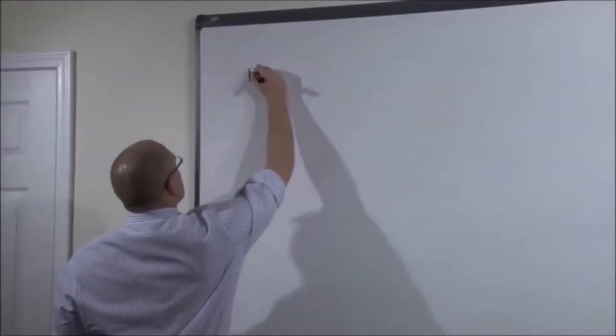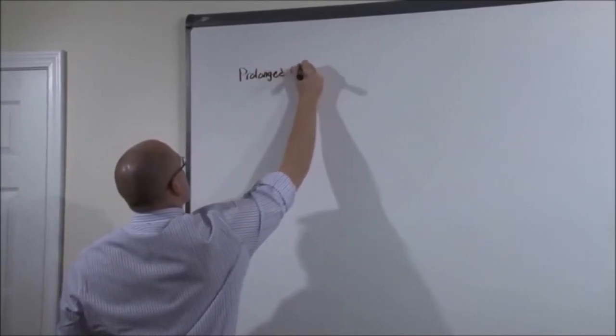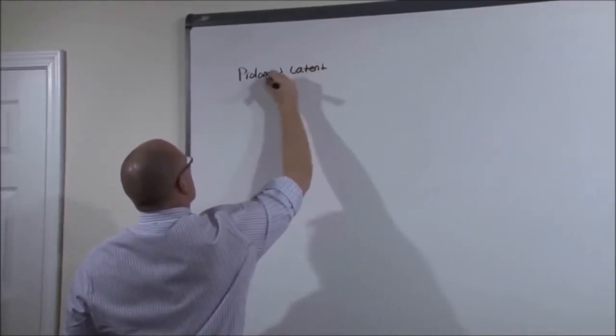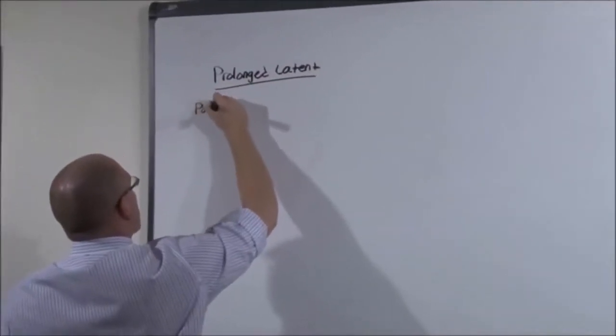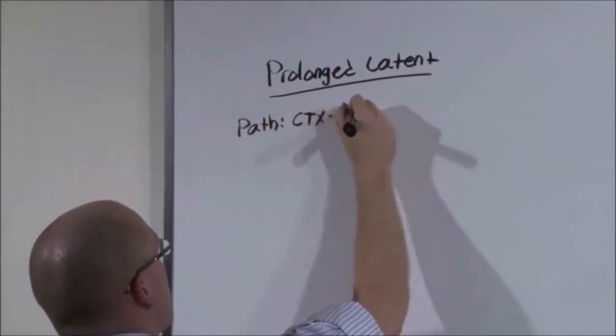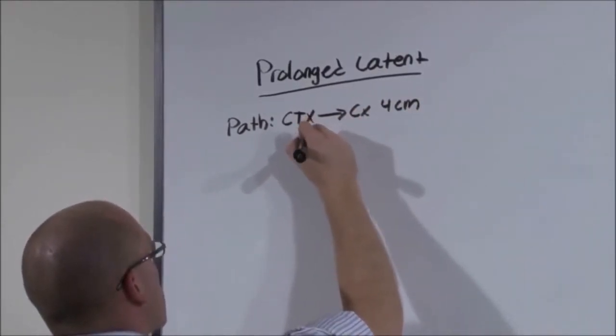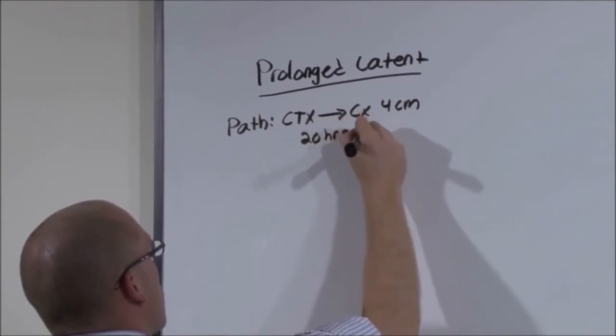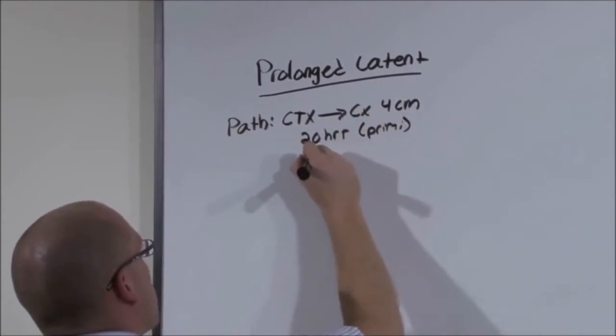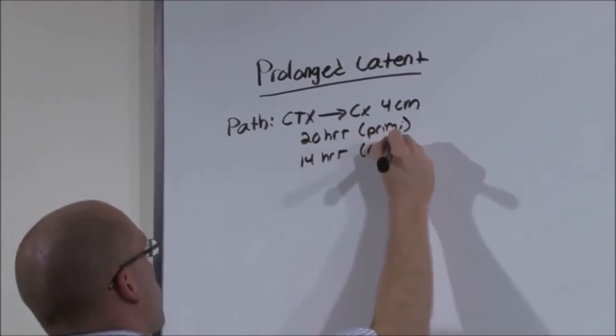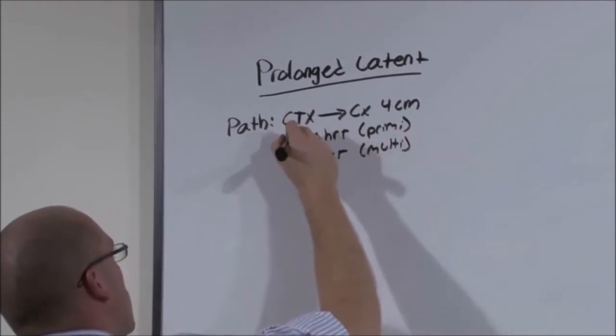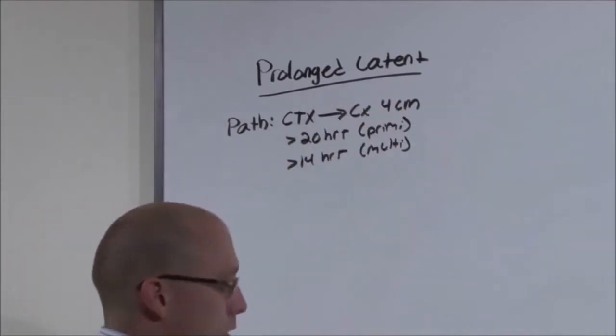Let's start with prolonged latent phase. Recall that the latent phase occurs from the onset of contractions until the cervix is dilated to 4 cm. It normally takes about 20 hours for a primip and 14 hours for a multiparous woman. If it takes longer than that, you're in prolonged latent phase.